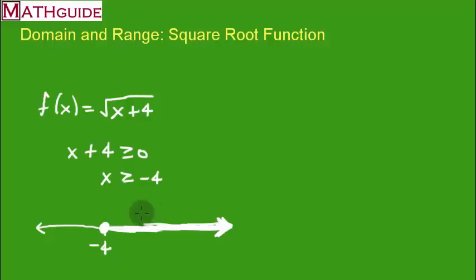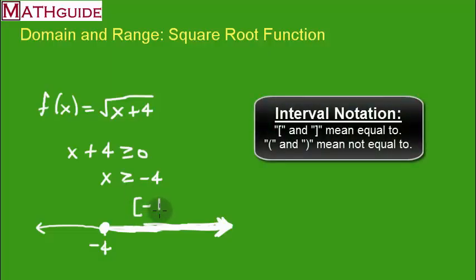Now, how do you write this as an interval? The left side of this interval is at negative 4, and it's equal to negative 4. So if you remember interval notation, you put a little bracket. That means equal. What's the right side of this interval? The right side keeps going to the right forever. It's unbounded, so we say it's running off to positive infinity. You can never be equal to infinity, so you put that parenthesis for the end. This is our domain.